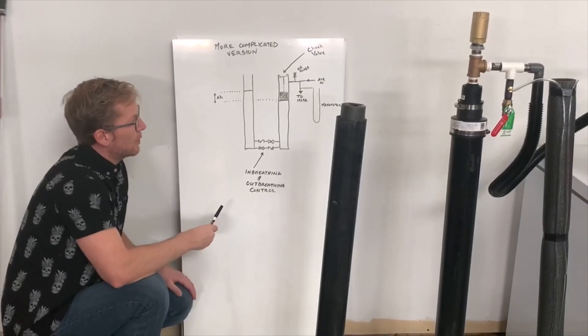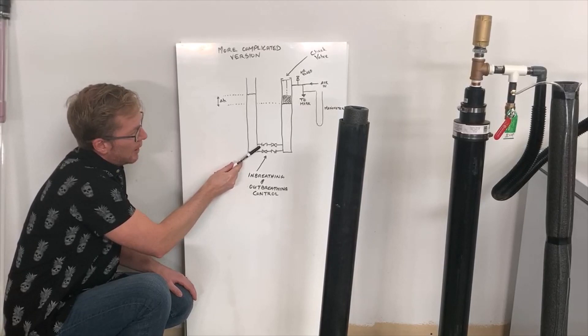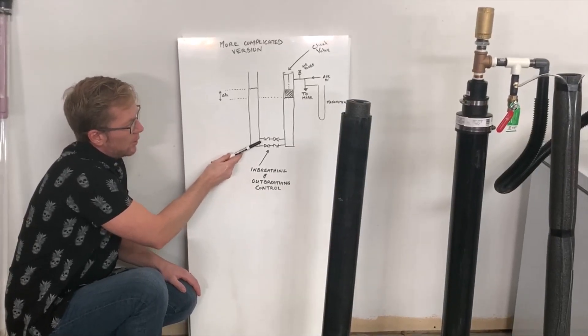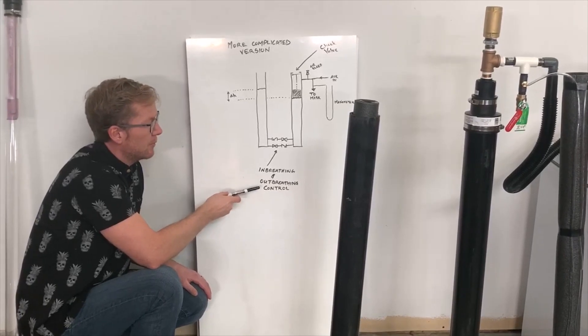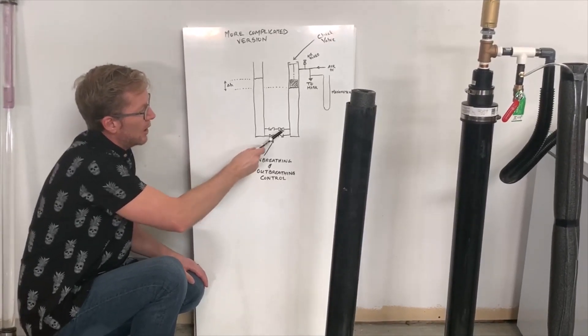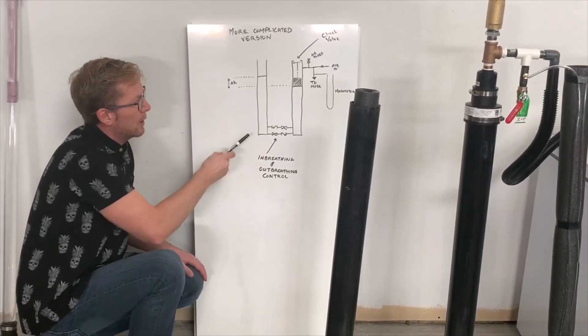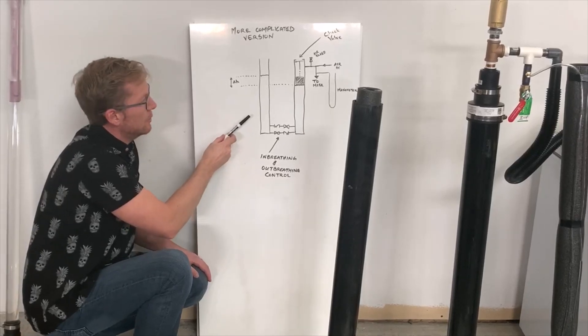A slightly more complicated version of the system has two lines on the bottom of the U-tube, each one with a check valve and a manual valve so you can adjust the rate of in-breathing versus out-breathing by changing how easily liquid can flow in one direction or the other between the sides of the U-tube.